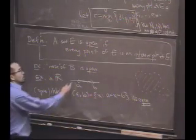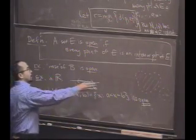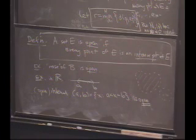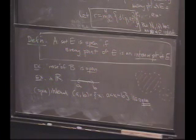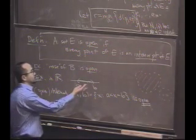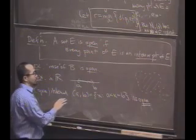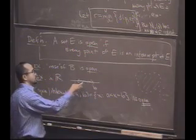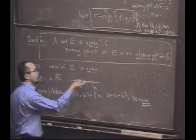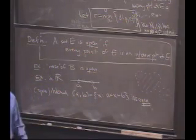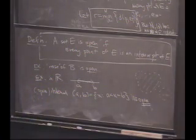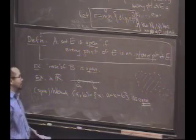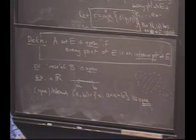What do the other open sets look like? Any other open set — we'll see this very soon — if you just take unions of open intervals, you'll get open sets. And those are basically the only kinds of open sets you can have.